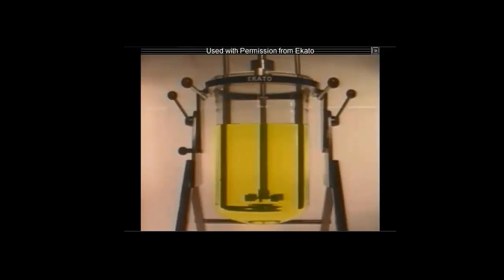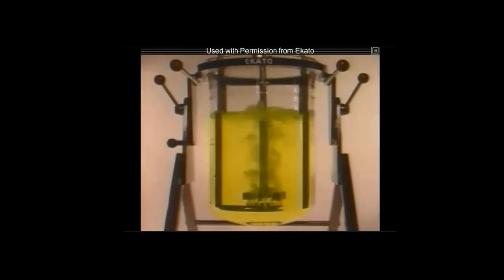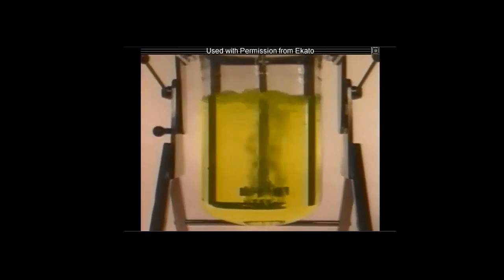Gas liquid dispersion is a multi-phase process where liquid in a tank or column is contacted with a flowing gas stream. The tank is baffled if the viscosity of the liquid is low, and an impeller is used for both bulk motion of the liquid and to disperse the gas. The gas is usually injected underneath the impeller.